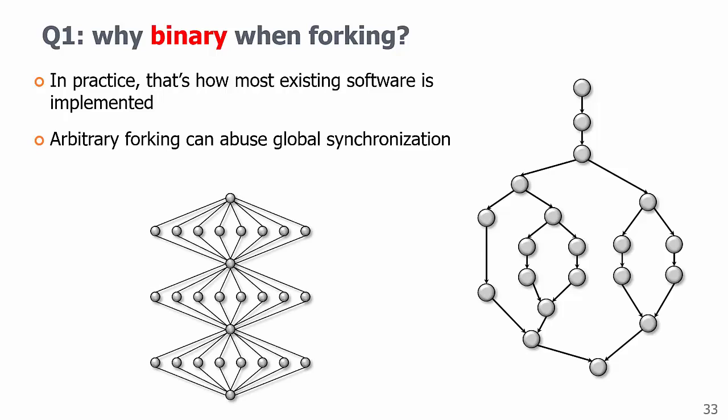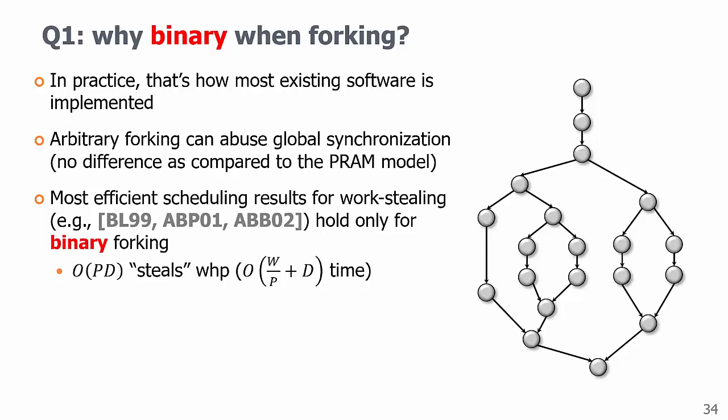Another key reason is that the most efficient existing scheduling results for work stealing hold only for binary forking, including the order of PD steal guarantee we have just mentioned. You can use binary forking for log n rounds to simulate n-ary forking, but the span bound will increase by the factor of log n.